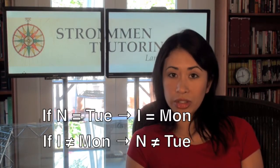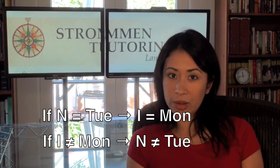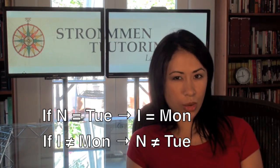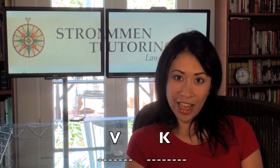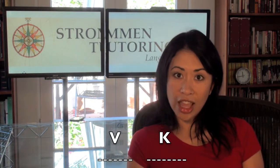For the third rule — if Nancy is scheduled for Tuesday, Iris is scheduled for Monday — we write it as: if N equals Tuesday, then I equals Monday. And again, the contrapositive: if I does not equal Monday, then N does not equal Tuesday. The reason the contrapositive is so important is because the LSAT doesn't often test whether you understood the rule straightforwardly — it tests whether you understood what else it could mean. And finally, the last rule: Kate is scheduled for the next day after the day for which Victor is scheduled. We write that simply as V, K next to each other, meaning V and K are always together in that order.